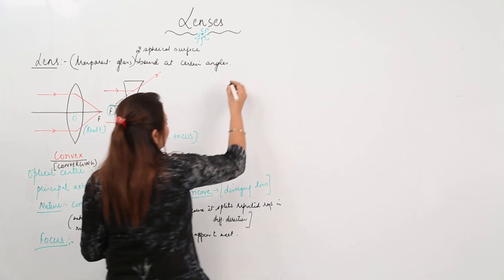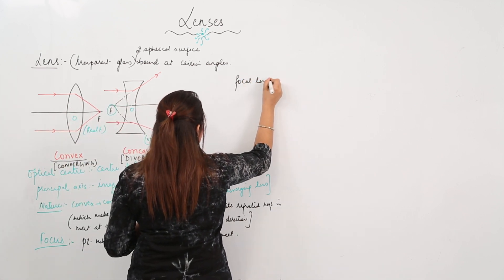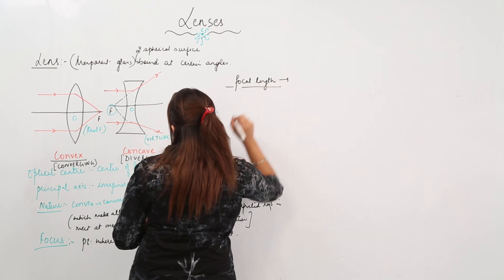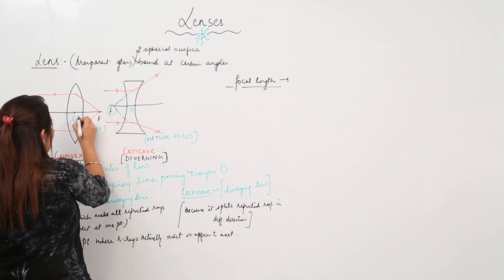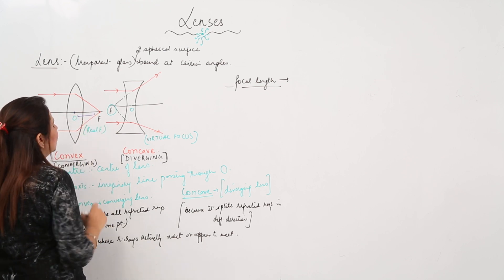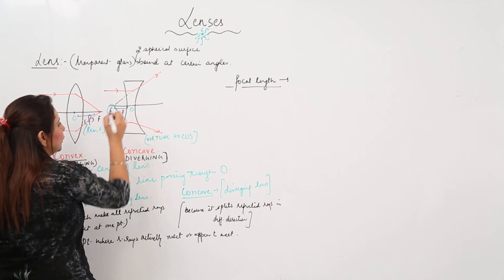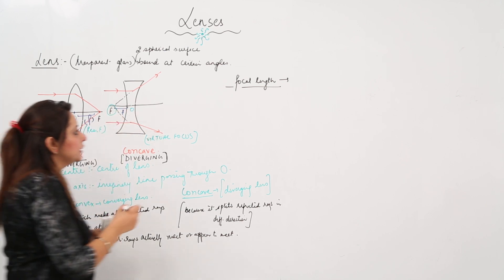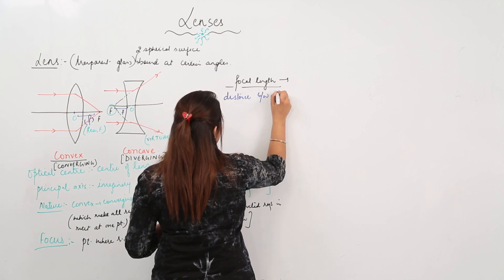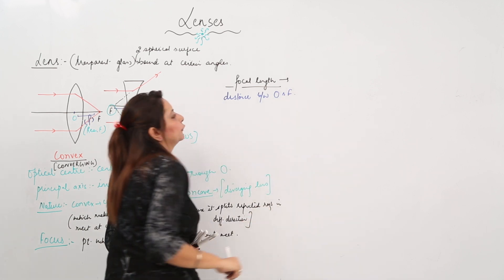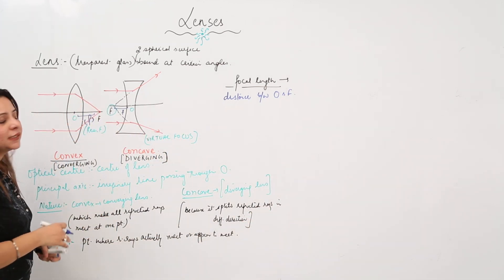Another term is focal length. Focal length is the distance between the optical center and the focus, denoted by small f. So focal length is the distance between the optical center and the focus.